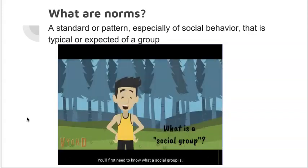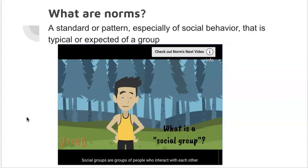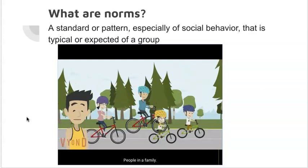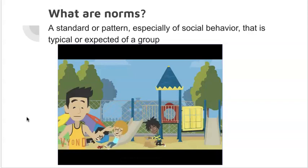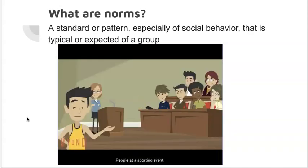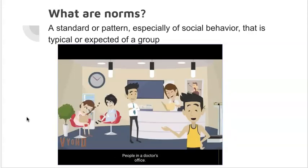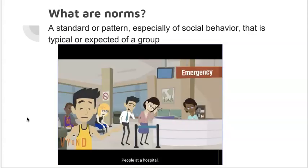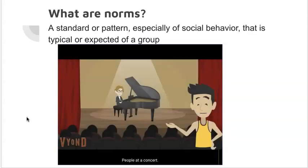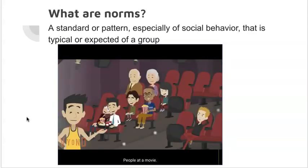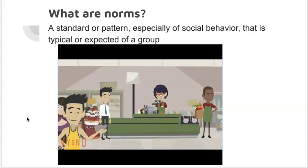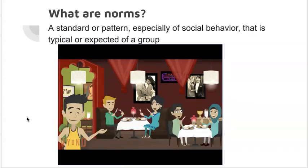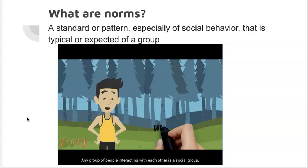You'll first need to know what a social group is. Social groups are groups of people who interact with each other. Some examples of social groups are people in a family, people at school and in a classroom or on a playground, people at an assembly, at a sporting event, in a doctor's office, at a hospital, at a concert, at a movie, at a store, or in a restaurant. Any group of people interacting with each other is a social group.